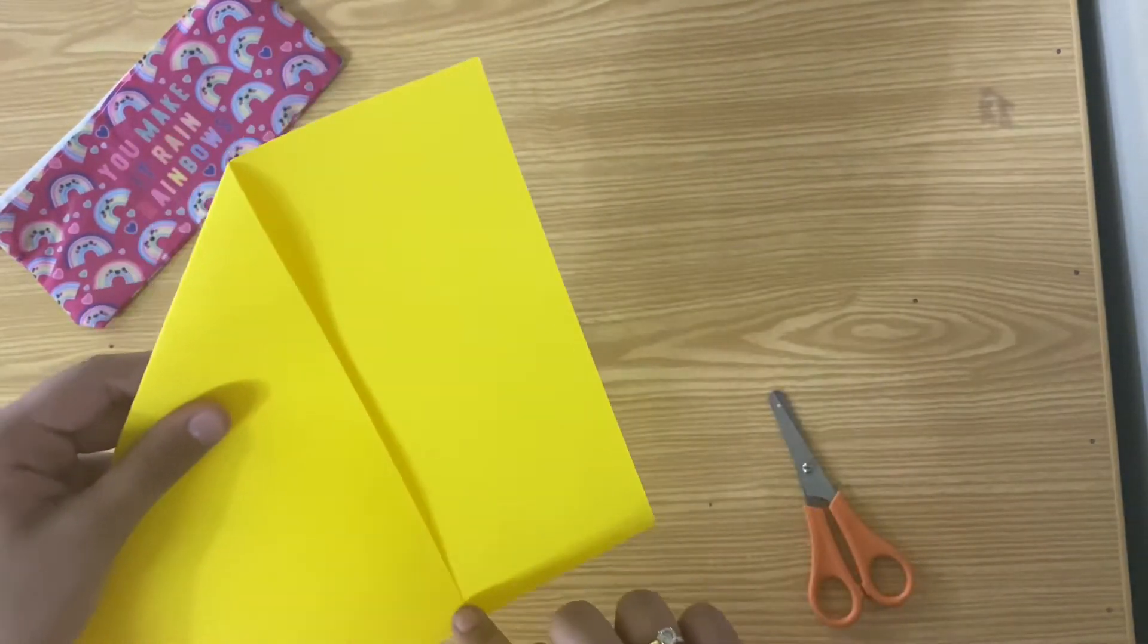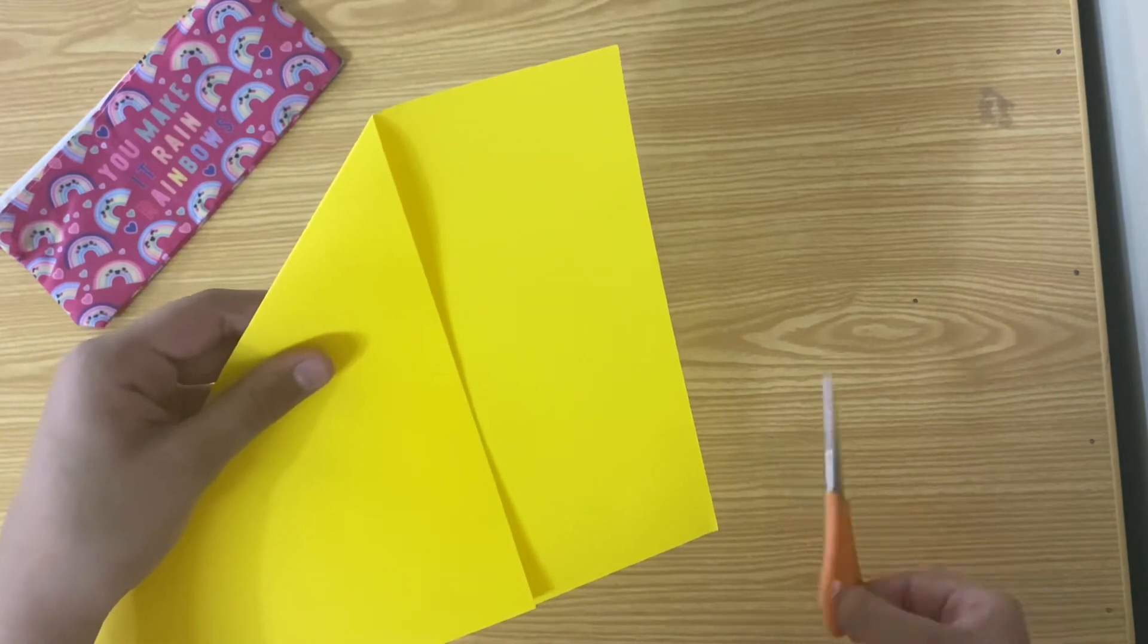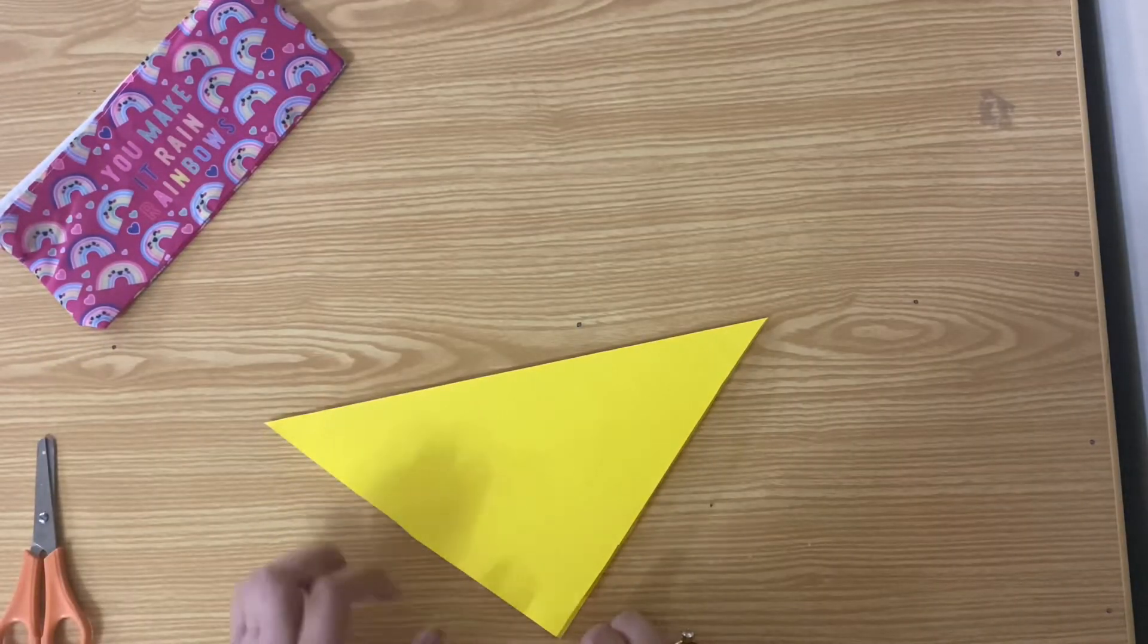Now I'm going to cut out this part to make a square from the A4 paper. Now I have my square.